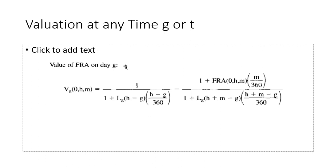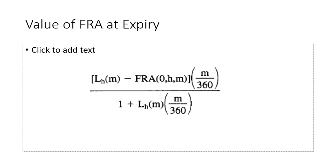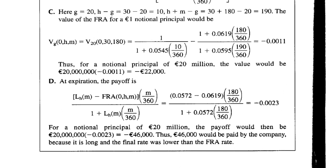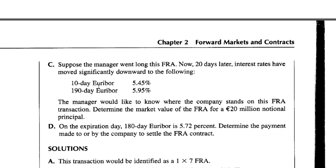At expiry, we use the expiration value formula. This shows the value based on the 180-day LIBOR at expiry. It is: (L(H,M) − FRA) × M/360, divided by (1 + L(H,M) × M/360). We use the 180-day rate since M equals 180 days, subtracting the FRA rate calculated during pricing. If positive, the long benefits; if negative, the long is at a loss.